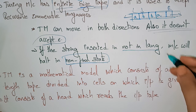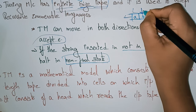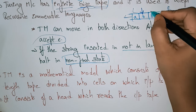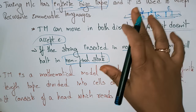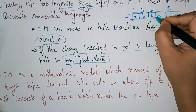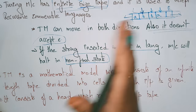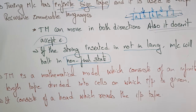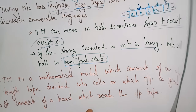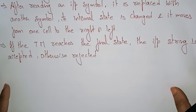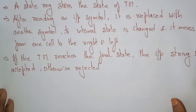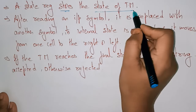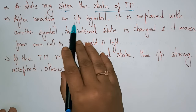It consists of a head which reads the input tape. First it is reading B here, and after that the head moves to the right. Next it reads again B, and again the head moves to the right. So after reading one cell, the head moves to the right or the left and reads whatever element is present in the tape.